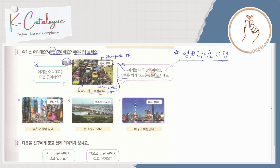So, ngayon try natin mag-practice for number 1, 2, and 3. Umpisa natin sa 1. Same lang ng question, tapos yung answer natin, gagayahin lang natin yung pattern na ginawa niya dito. Ito yung gagayahin natin — papalitan lang natin yung mga name ng lugar at saka yung description.